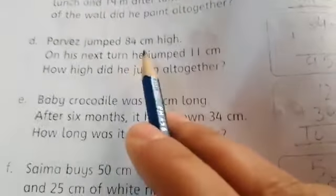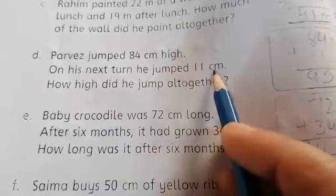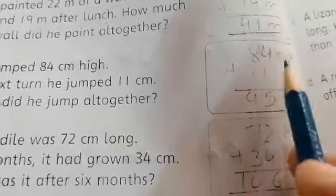Parvez jumped 84 centimeter high. On his next turn, he jumped 11 centimeter. Total jump, we will add these two values.